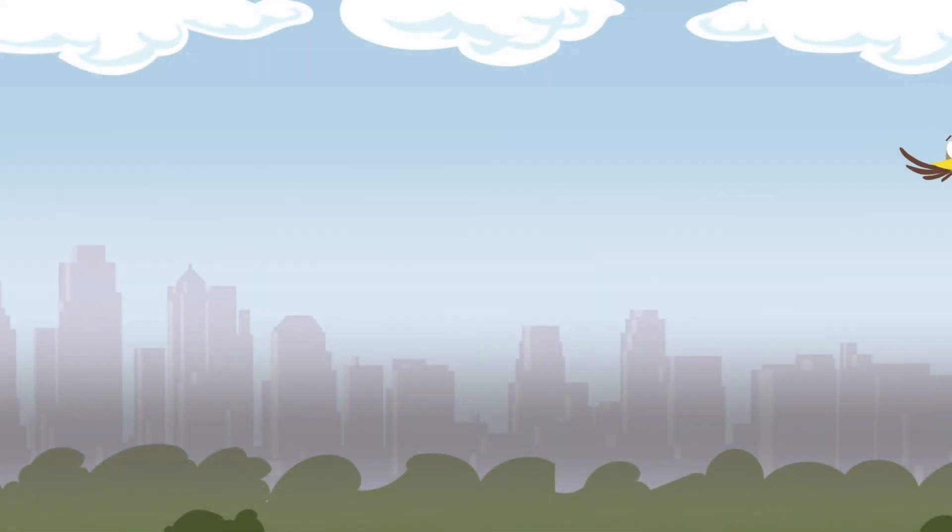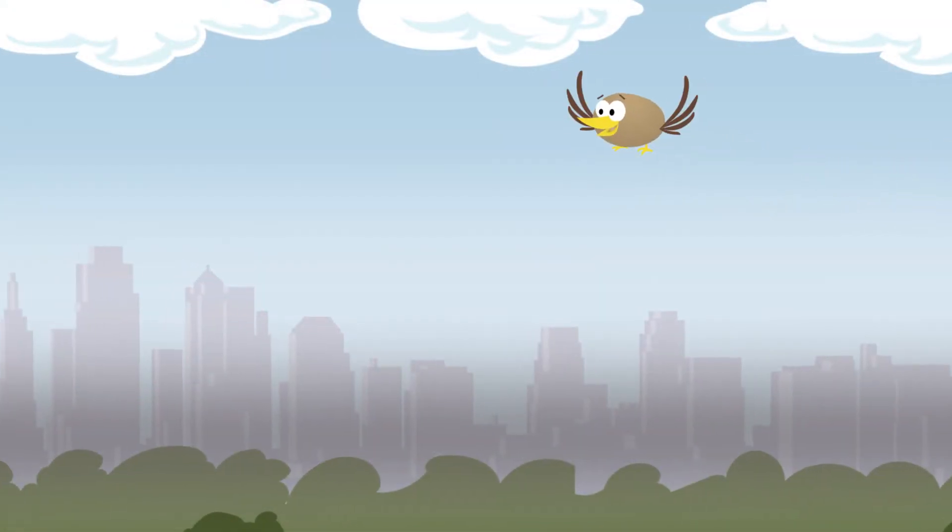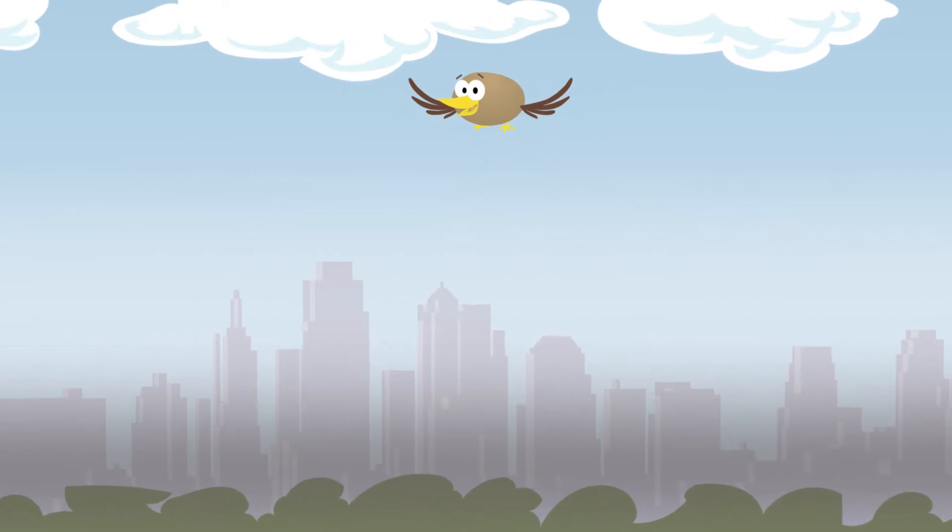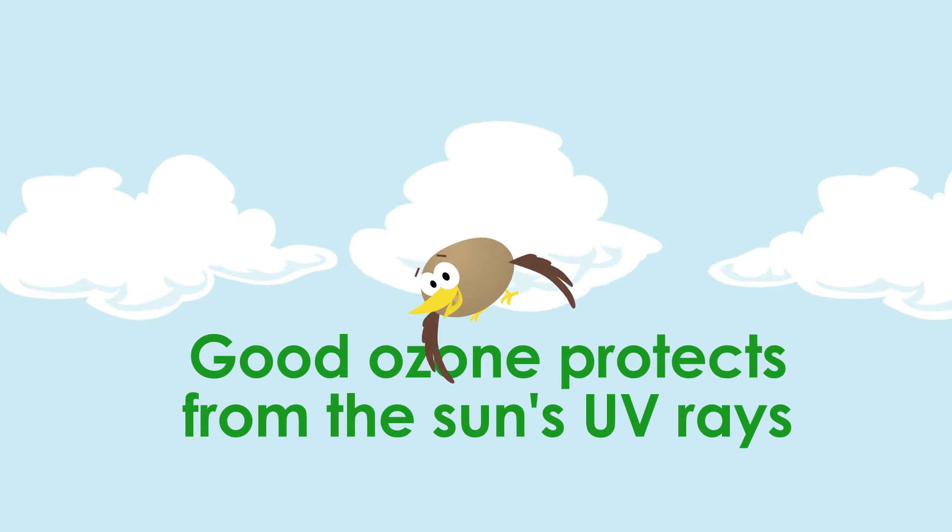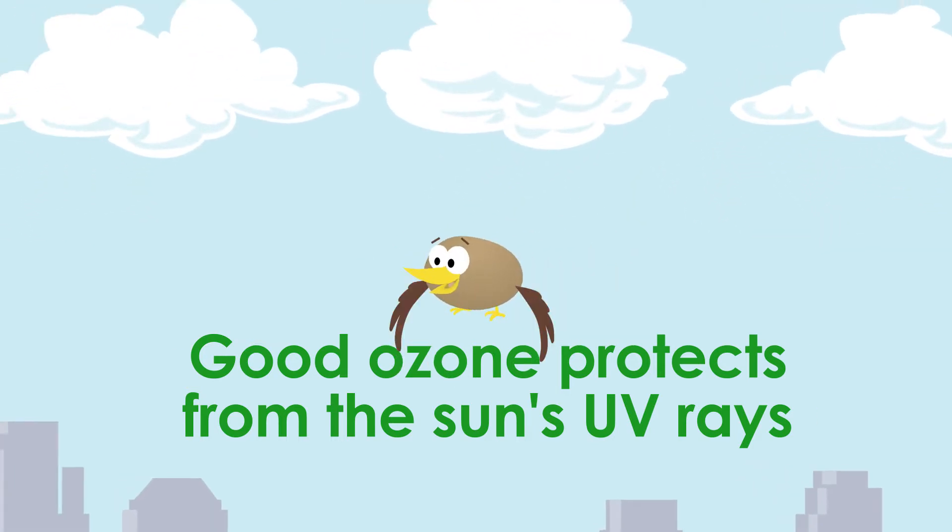Quentin spends a lot of time cruising the sky around the Kansas City metro. With all that flight time, he's becoming a bit of an air expert. He knows ozone is good up high above the earth, where the ozone layer protects us from the sun's harmful ultraviolet rays.